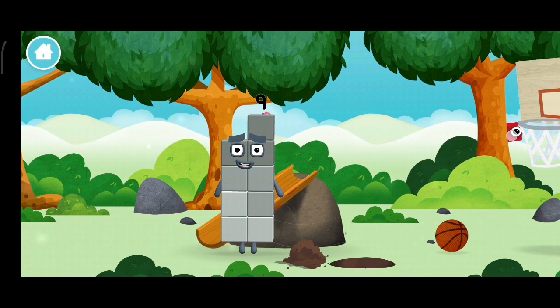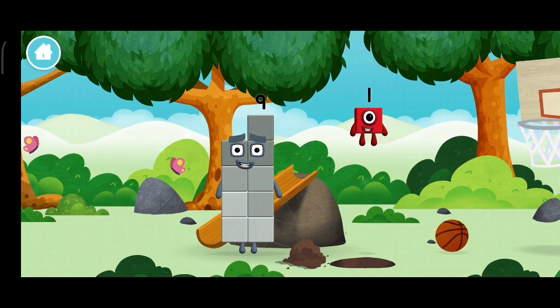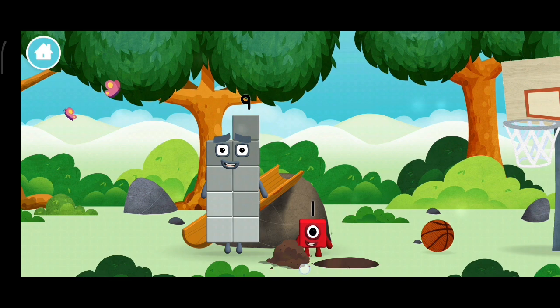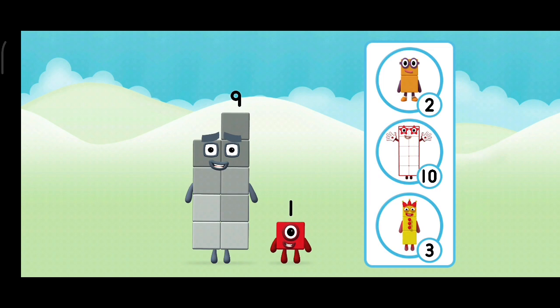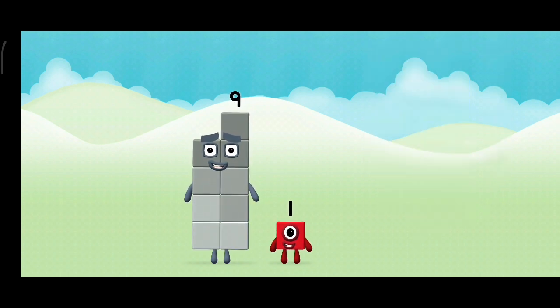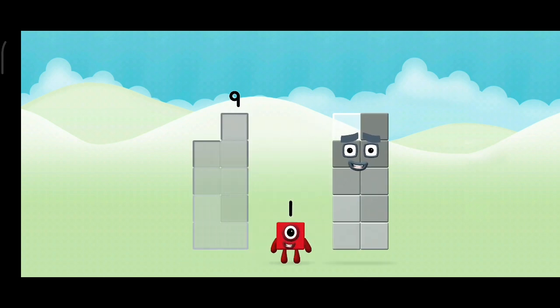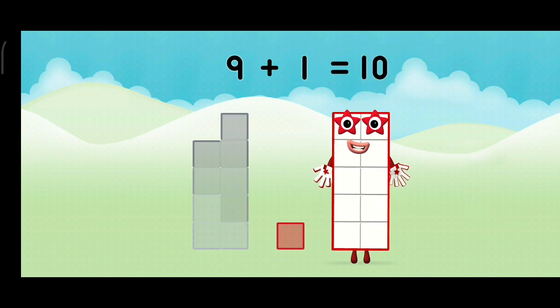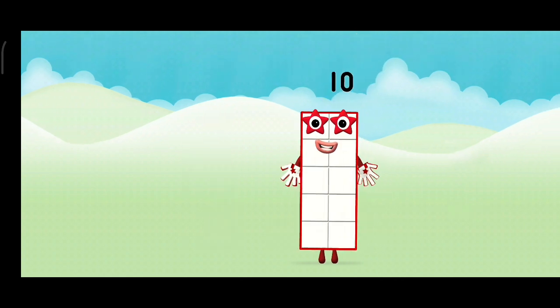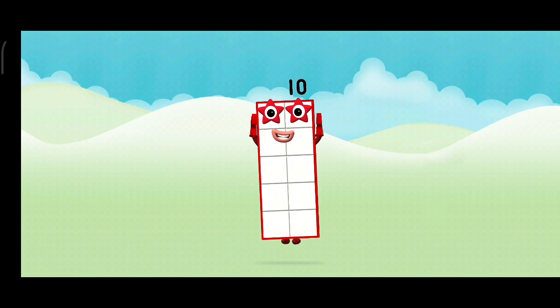A basketball net, a basketball net. What number block can you make by adding these two together? Great! Now add the number blocks together. One. Nine plus one equals ten. Ten. Well done.